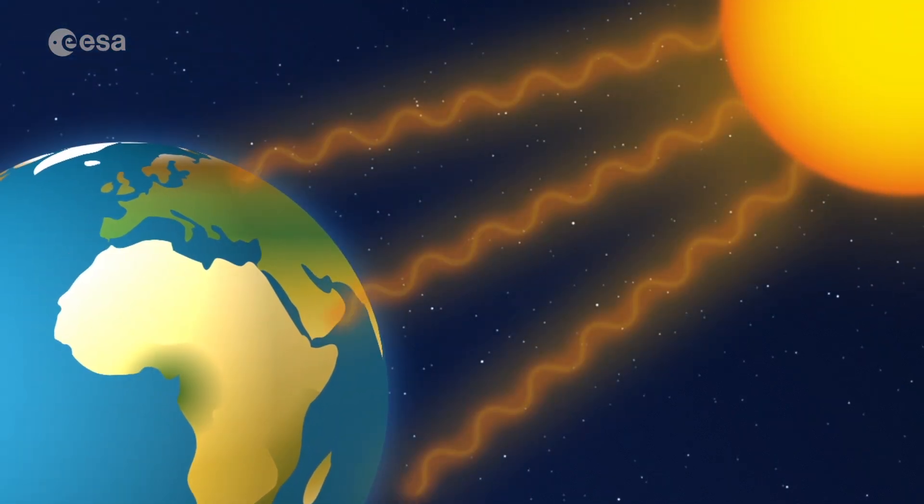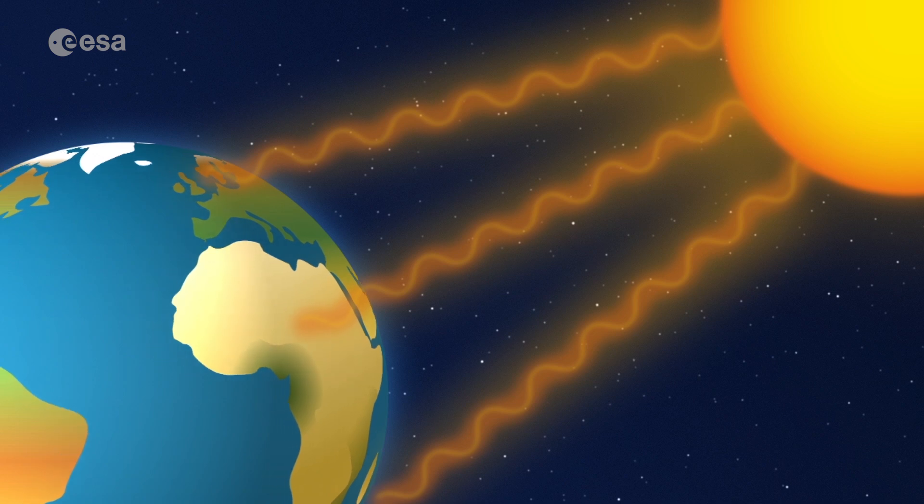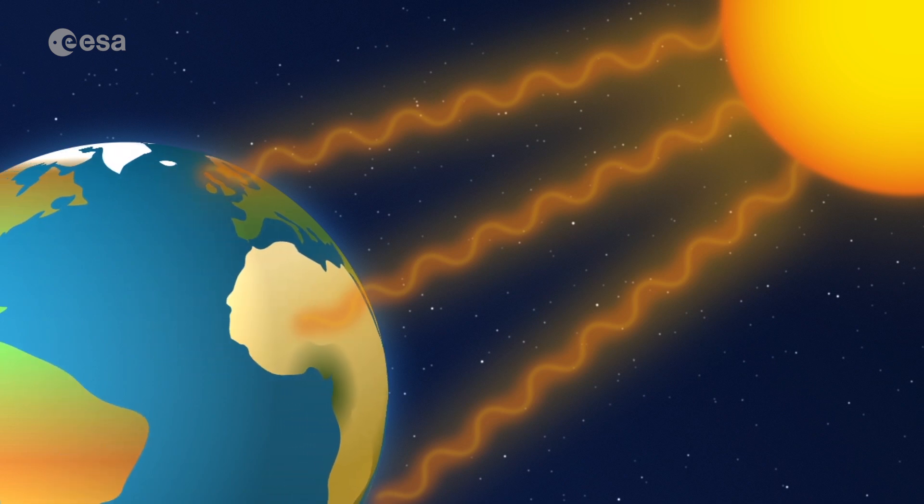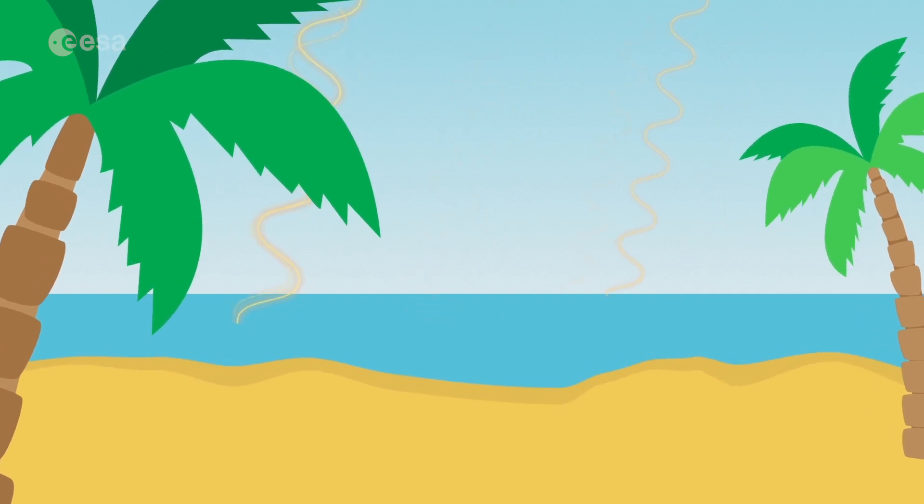When the sun heats the Earth, it causes the temperature of water in rivers, lakes and oceans to rise. When this happens, some of the water evaporates into the air, becoming a gas called water vapour. This is called evaporation.